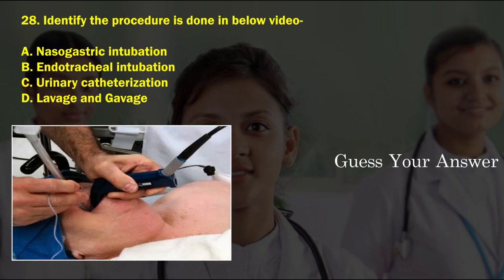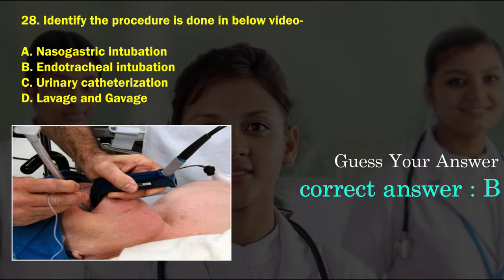Identify the procedure done in the below image. Option A: nasogastric intubation, option B: endotracheal intubation, option C: urinary catheterization, option D: lavage and gavage. The correct answer is option B, endotracheal intubation.